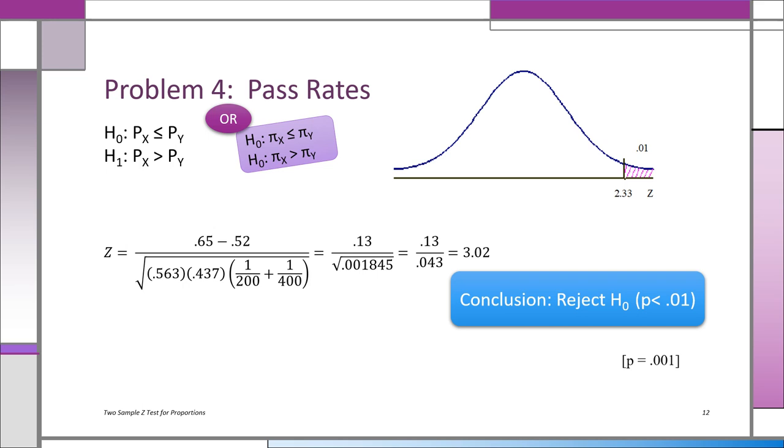So now we convert everything to a z score, and notice that the rejection region—notice H1 points to it—is on the right, and the critical value is 2.33 for z. That's at the 0.01 level. We end up with a z score of 3.02, so we're in the rejection region, which tells us the sample evidence has less than one percent chance of occurring. And basically we reject the H0.